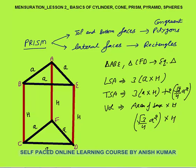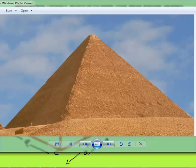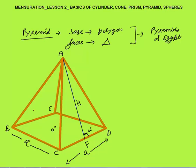The next solid is pyramid. The base is a polygon and the faces are triangular in nature. The famous structures in the world are the pyramids of Egypt — a very famous tourist destination. Here I have made a pyramid with the base as a square, where both the length and the breadth are a centimeters — so the base is a square with side a centimeters.